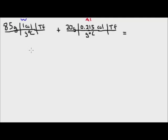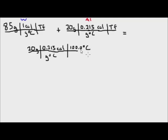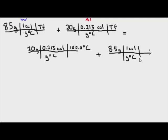Now I'll do the same for the other side of the equation. Taking the aluminum value: 20 grams of aluminum multiplied by the specific heat capacity of aluminum, 0.215 calories per gram degree Celsius, multiplied by 100 degrees Celsius — the starting temperature of the aluminum. To this we add the values for the water: 85 grams of water multiplied by the specific heat of water, 1 calorie per gram degree Celsius, multiplied by the starting temperature of the water, 20.0 degrees Celsius.